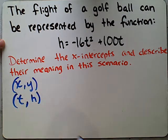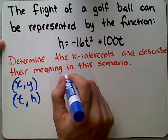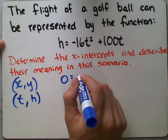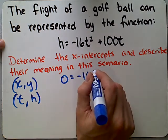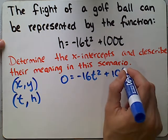So instead of y being 0, we're going to make the h-value 0. So we're going to start here, make the h-value 0. We get 0 equals negative 16t squared plus 100t.